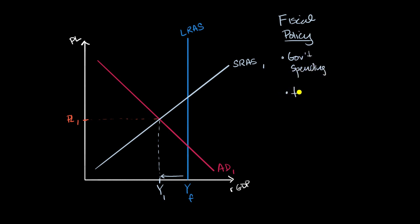Or changing the amount of taxation. So the theory is if the government spends more, that would increase total output. And the theory is if the government taxes less, there's more money out in the economy, and that could also increase total output.